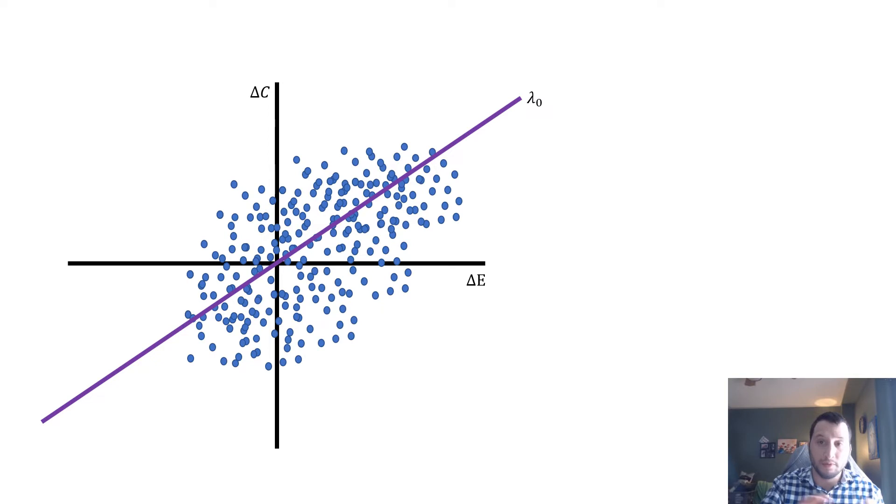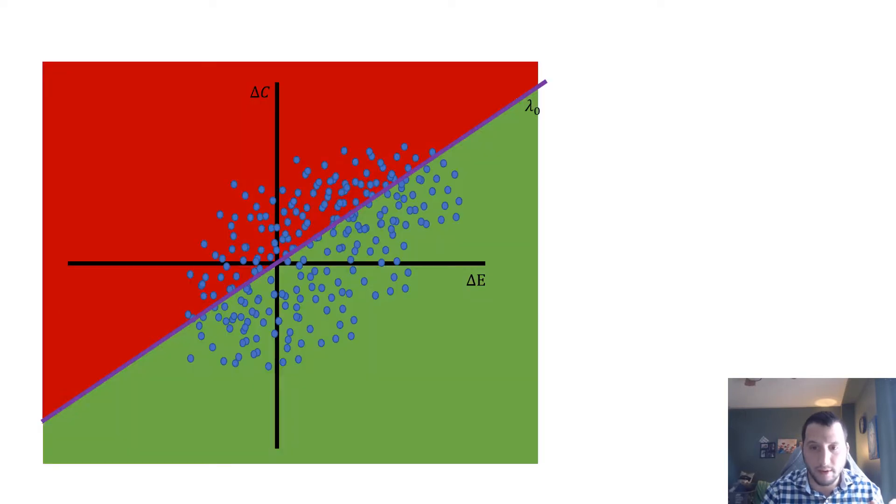What we do traditionally now is we're going to put in this threshold. We're going to call it lambda naught right here, and that's going to separate our region into two places: one which is cost-effective, denoted in green, and one which is not cost-effective, which is in red.